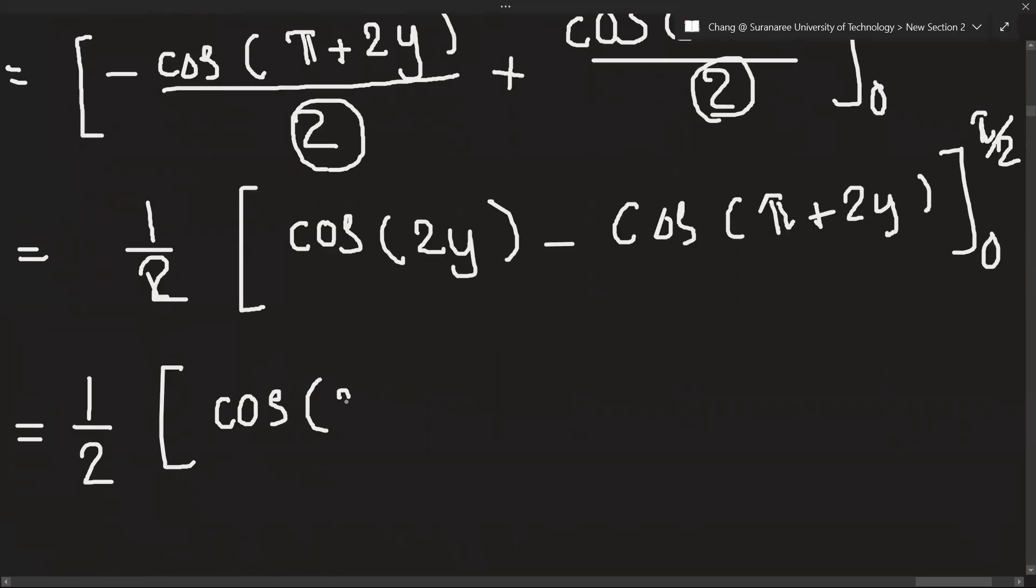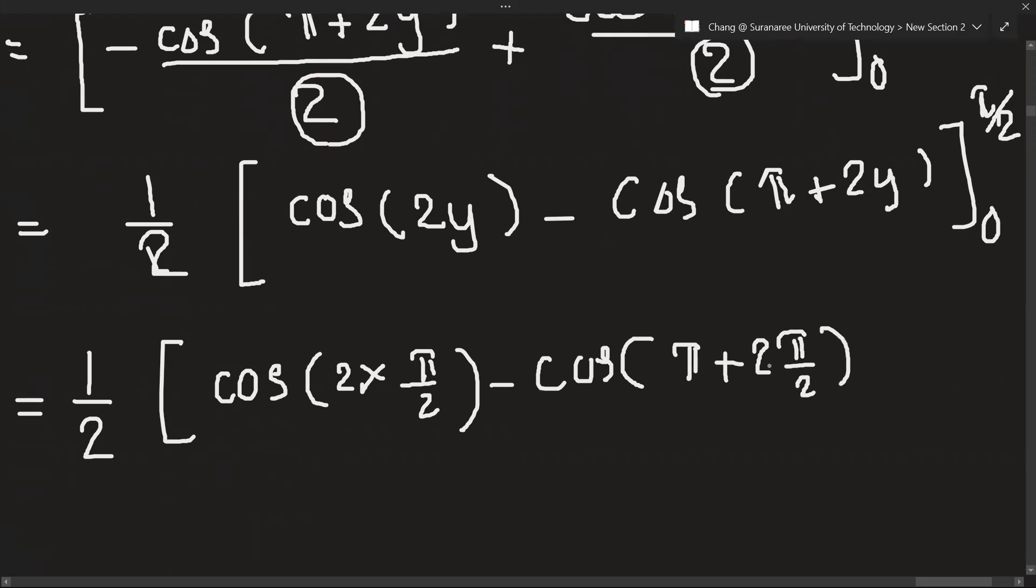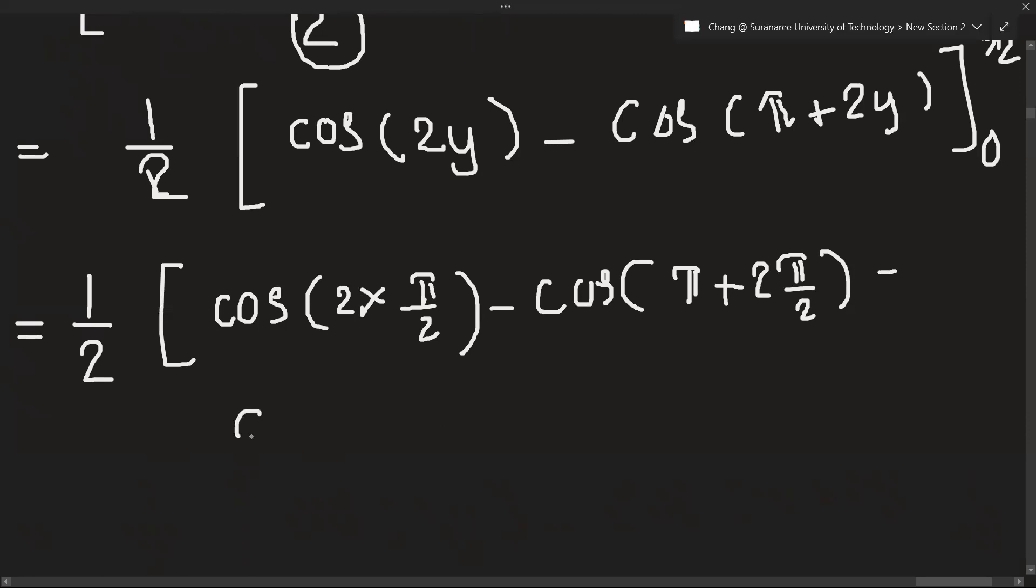All right, we got it. So 2 into pi over 2 minus cos, wait, pi plus 2 pi over 2. Minus cos, when we insert 2 into 0, we will get cos 0.